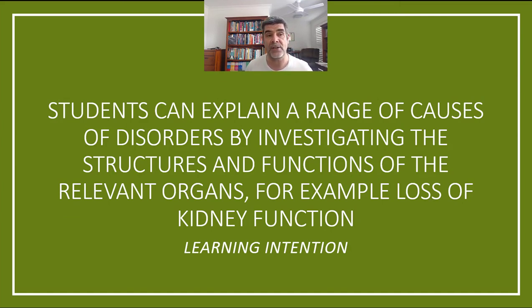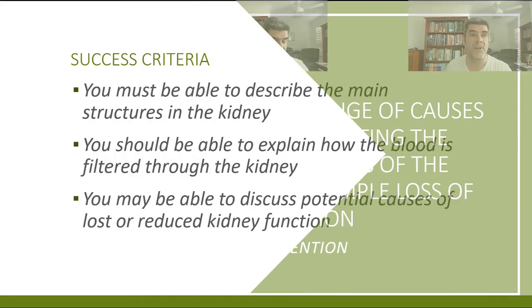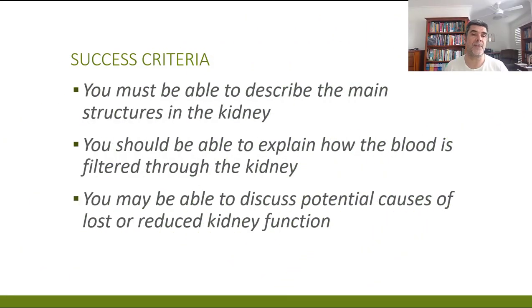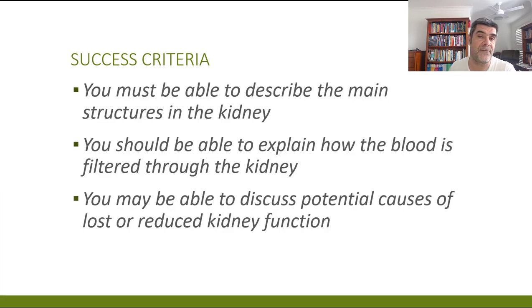We're going to look at some of the structures that are present and how they function in the kidney, and also some of the potential problems associated with loss of kidney function. We want to be able to describe the main structures and how blood is filtered, specifically looking at the nephron as the unit of kidney function, and discuss one or two potential causes of lost or reduced kidney function.